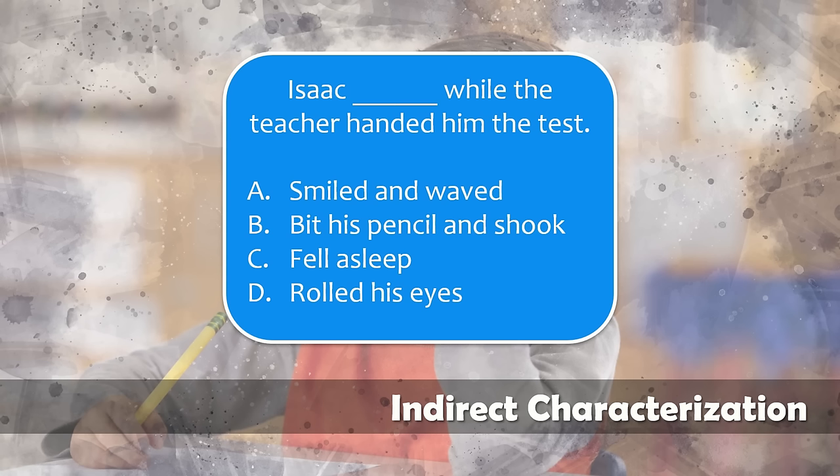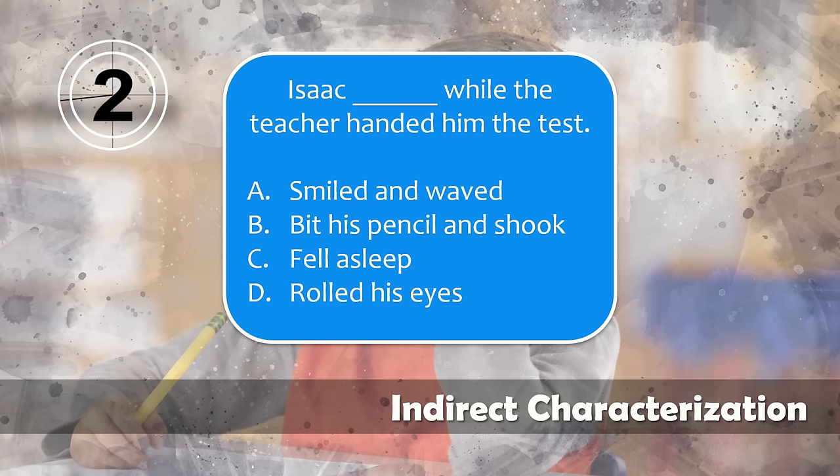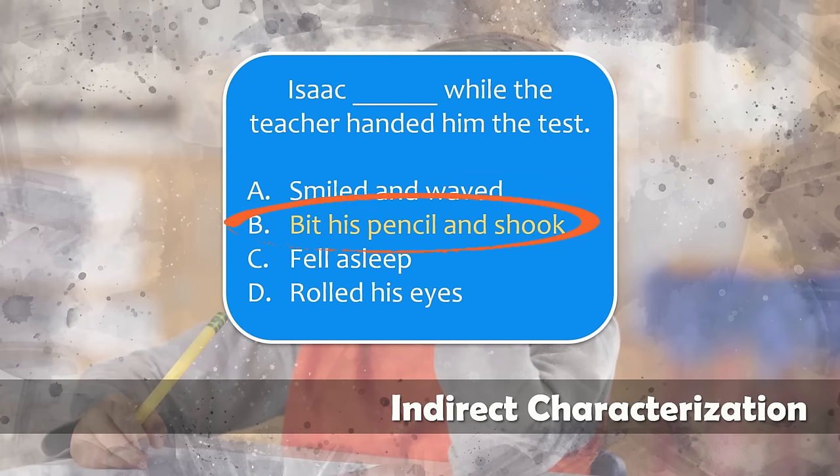'Isaac _____ while the teacher handed him the test.' A: smiled and waved. B: bit his pencil and shook. C: fell asleep. D: rolled his eyes. Time's up. Did you pick B? If so, that's correct. Bit his pencil and shook is a way to show that Isaac is nervous.